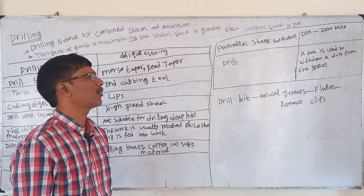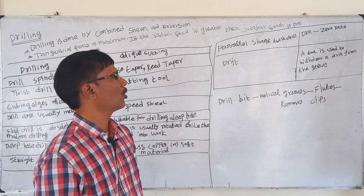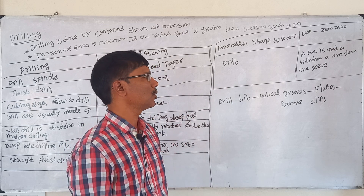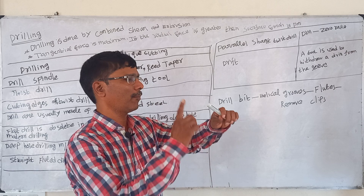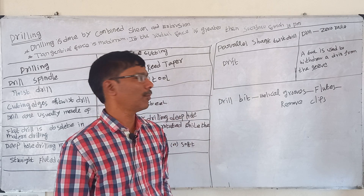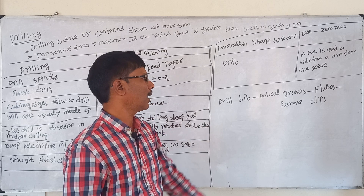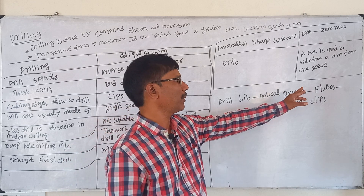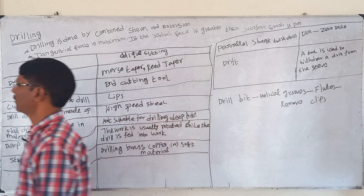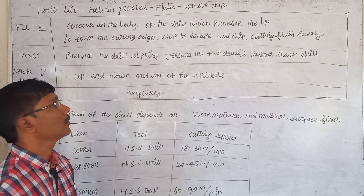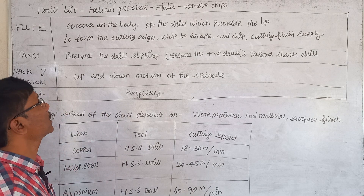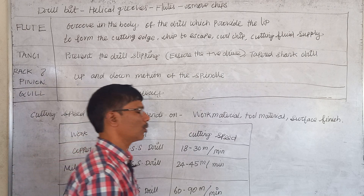In a parallel shank twist drill, the drill has zero rake angle. There is a tool called a drift, which is used to withdraw the drill from the sleeve. We place the drift and hit it with a hammer to release the drill bit. The drill bit is made up of helical grooves called flutes, which are used to remove the chips.